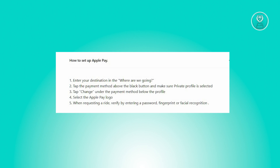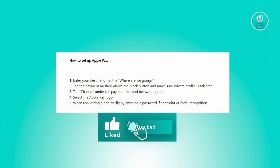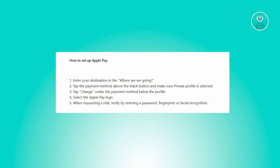Ensure that the private profile is chosen. From there, click on 'Change' beneath the payment method listed under the profile, and choose the Apple Pay symbol when requesting a ride.